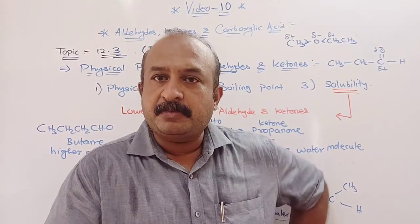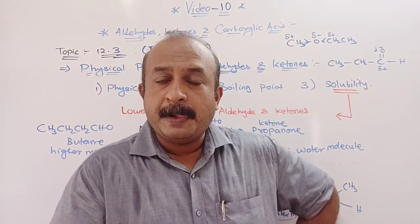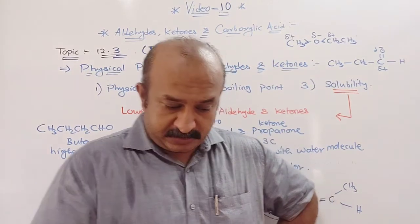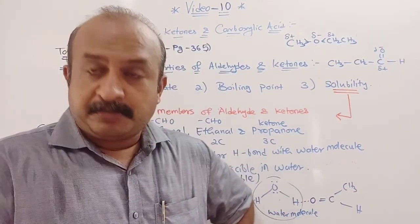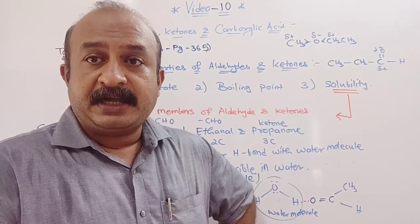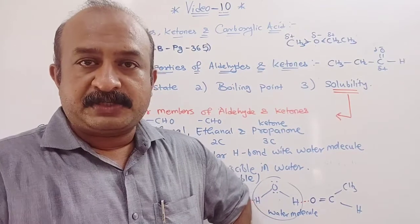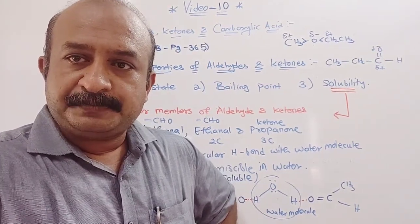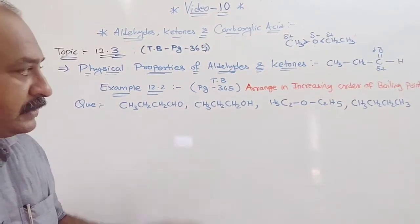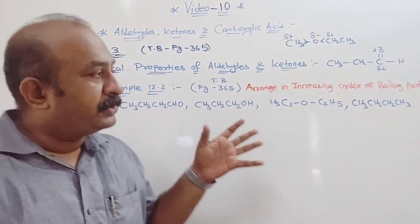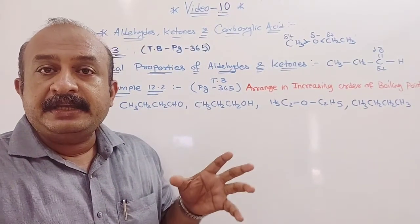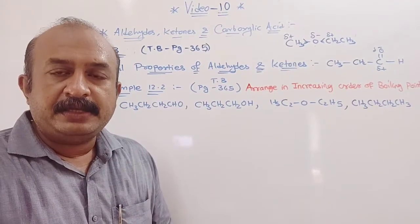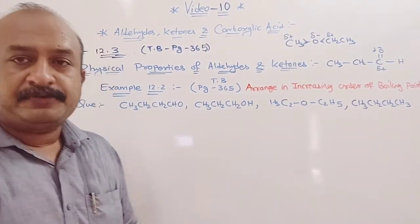This was all about the physical properties. In your book, textual example 12.2 on page 366 can also be asked for 2 marks. The question asks: arrange the following in increasing order of their boiling point.